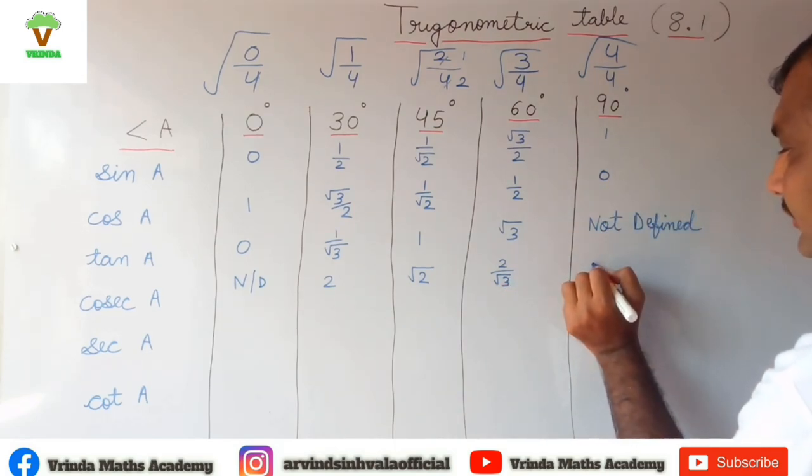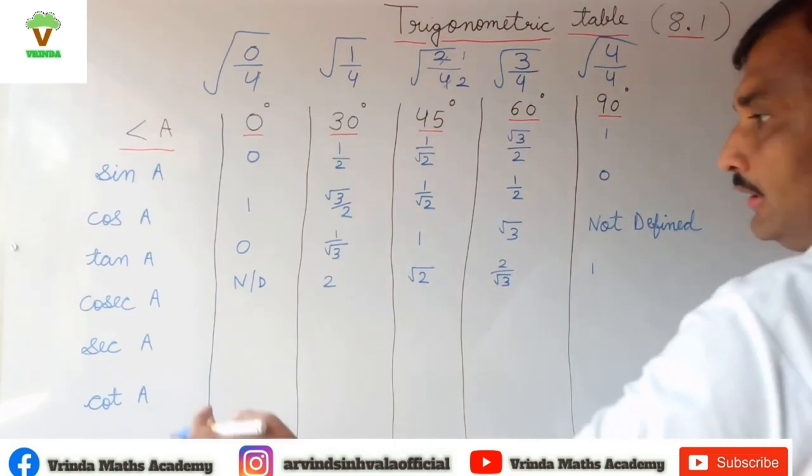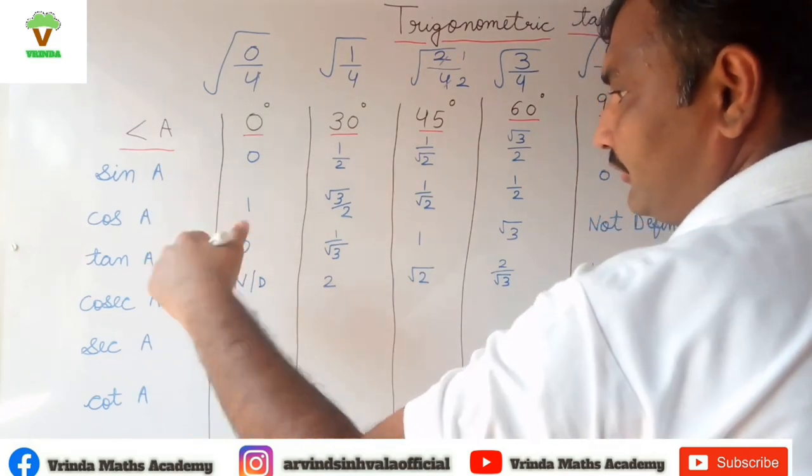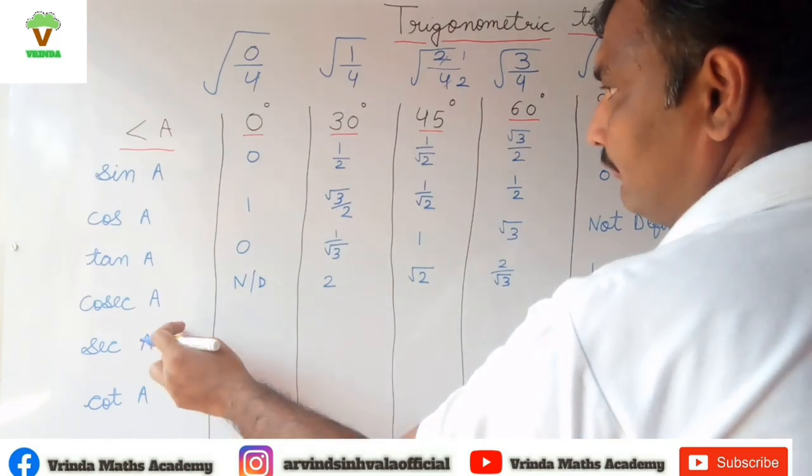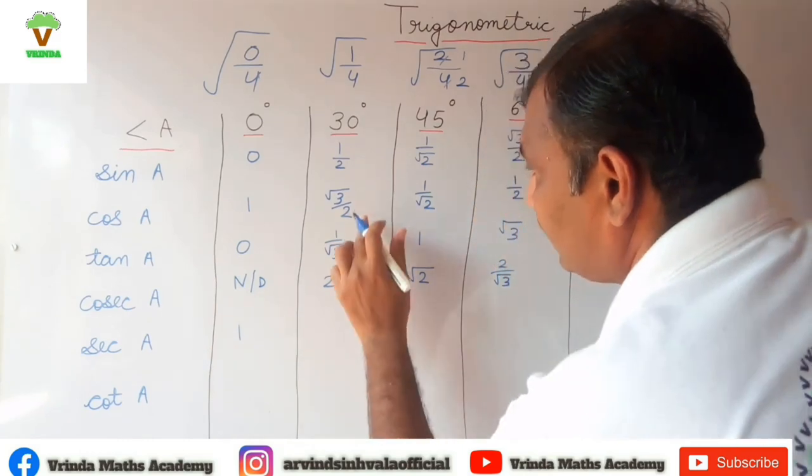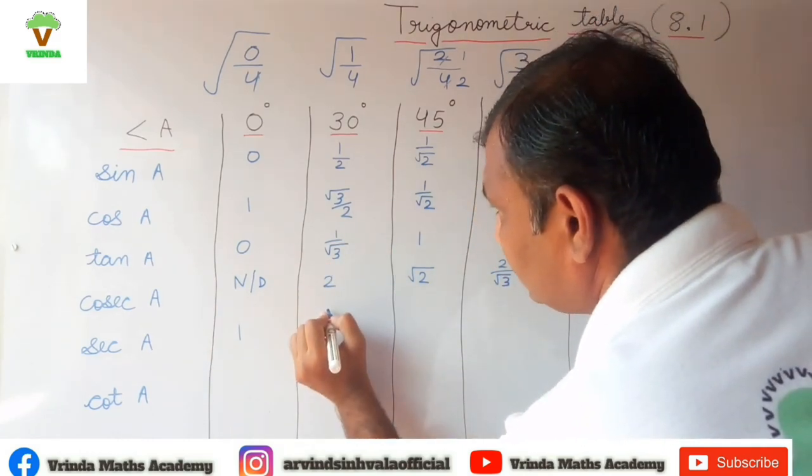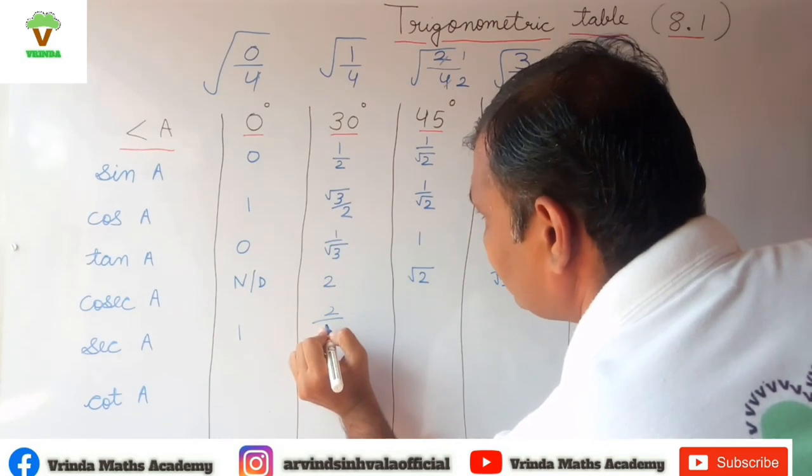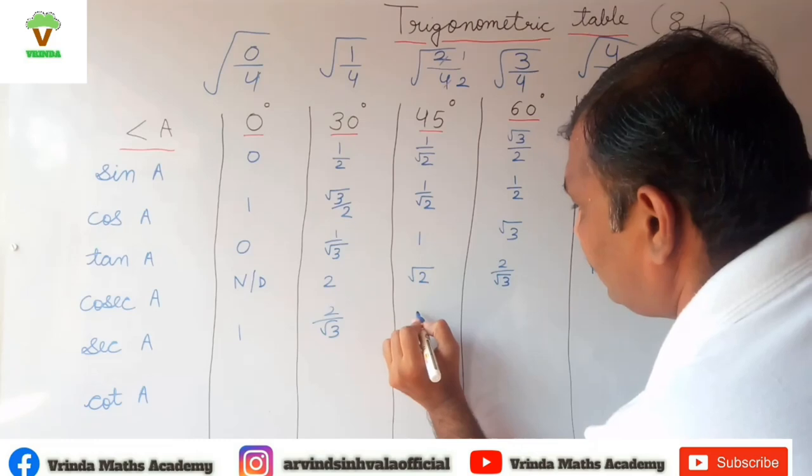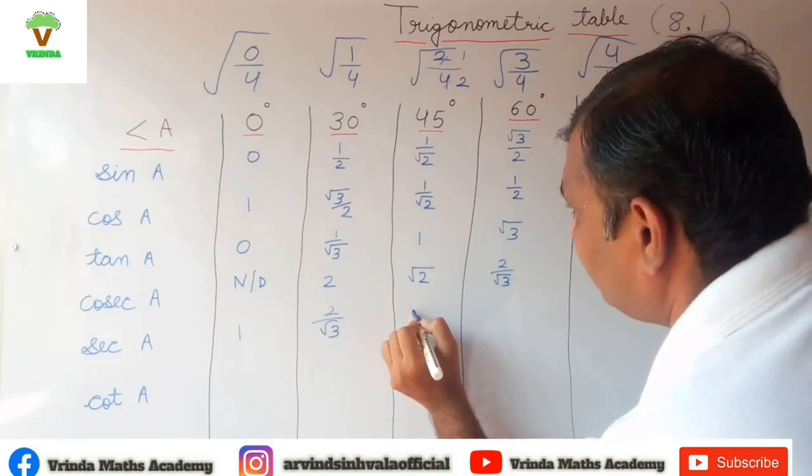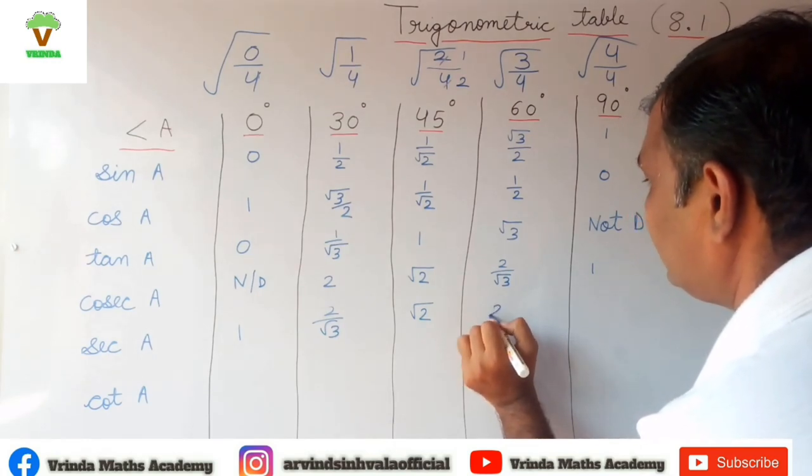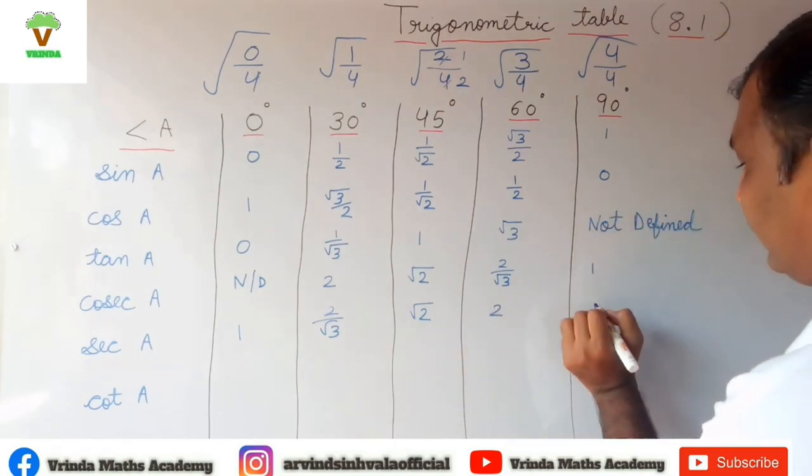Then sec A is 1 upon cos A, means we have to inverse the value of cosine A. So inverse of 1 is 1, root 3 upon 2 inverse is 2 upon root 3, root 2, 2, and 1 upon 0 that is again not defined.